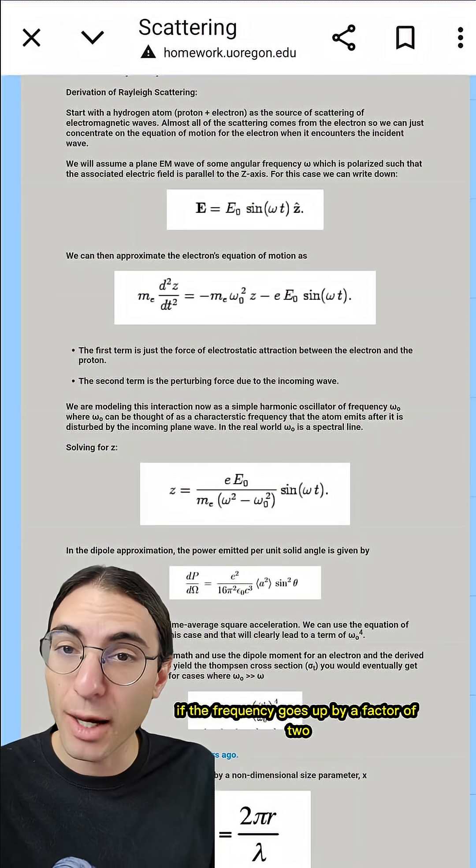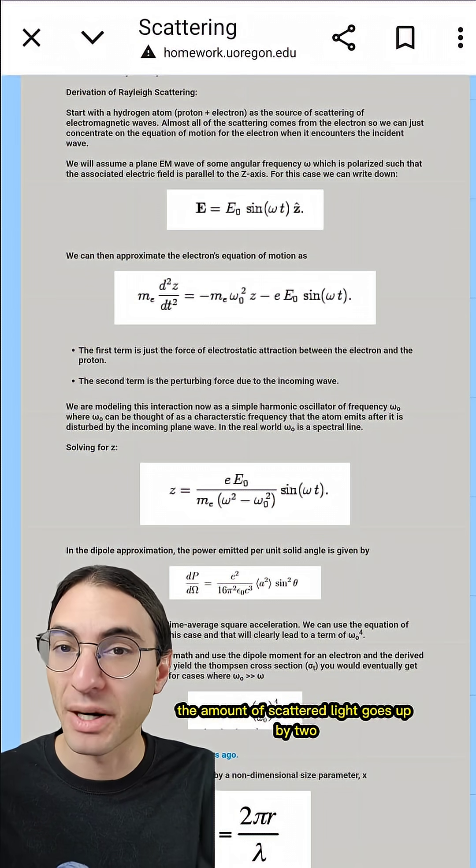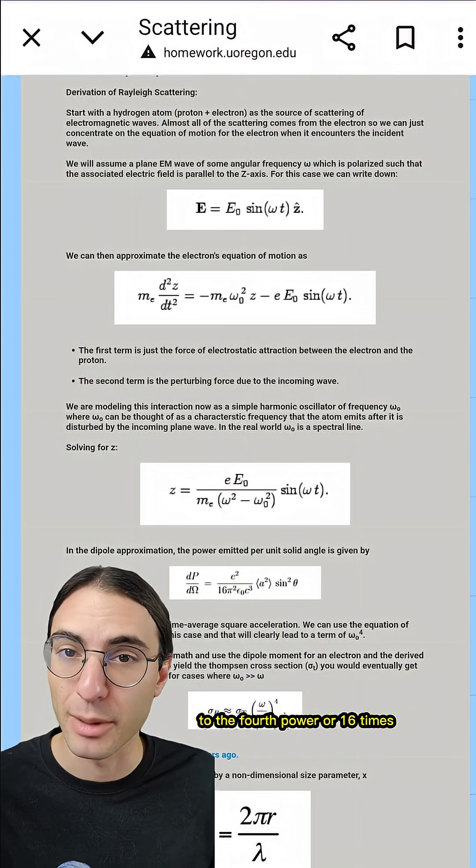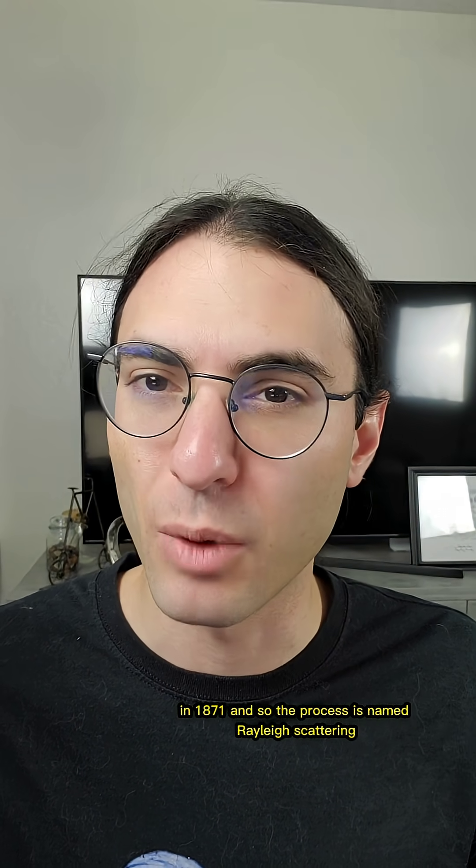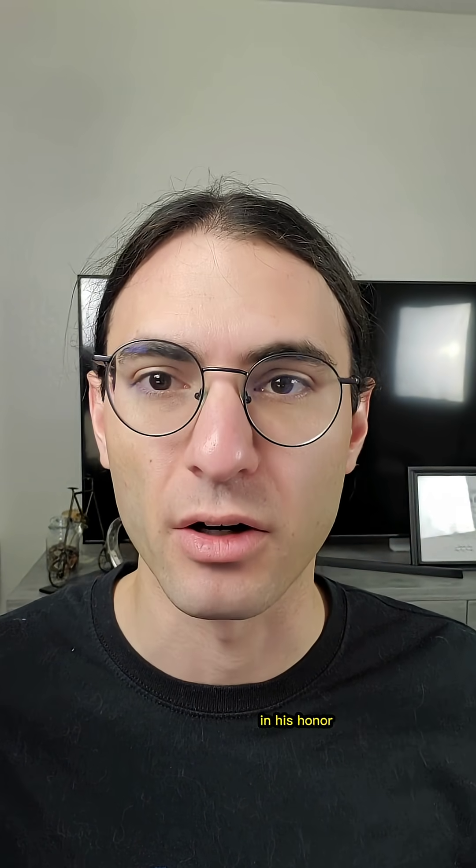If the frequency goes up by a factor of 2, the amount of scattered light goes up by 2 to the 4th power, or 16 times. This particular fact was derived by Lord Rayleigh in 1871, and so the process is named Rayleigh scattering in his honor.